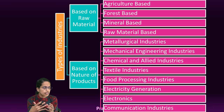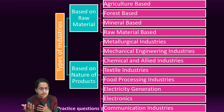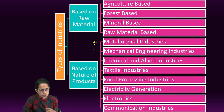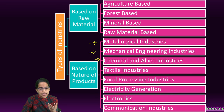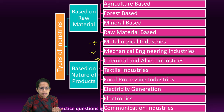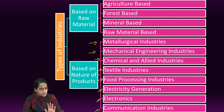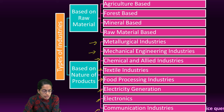Industries can also be small scale, large scale, or medium scale based on size. Based on the nature of products, there are eight further classifications: metallurgical industries, mechanical engineering industries, chemical engineering industries mainly allied to pharmaceuticals, textile industries such as cotton textile, food processing which is again agro-based, electricity generation, and electronics and communication industries. That is another classification based on the nature of product.